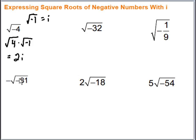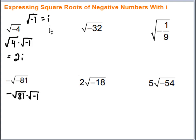For this next one, we break the negative number inside the square root into the square root of 81 times the square root of negative 1. That square root of negative 1 is i, and the square root of 81 is 9, giving us 9i.